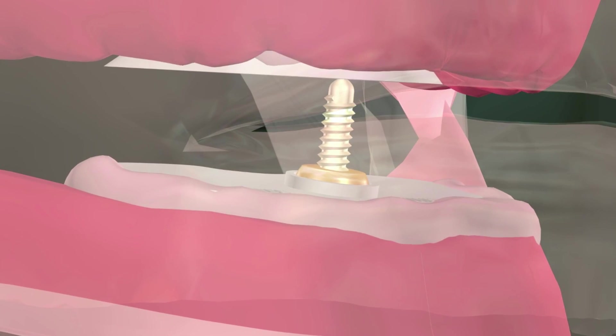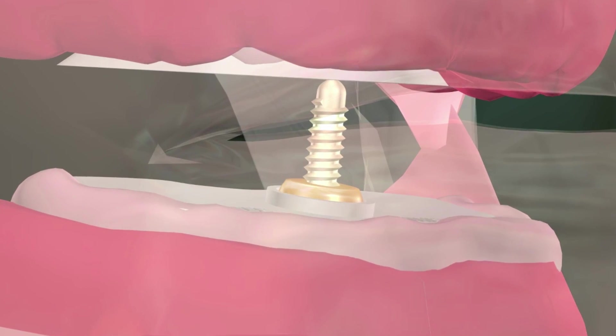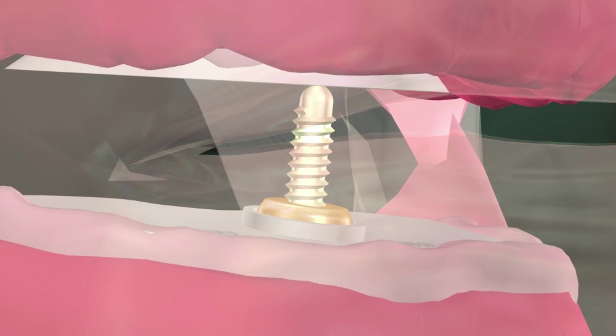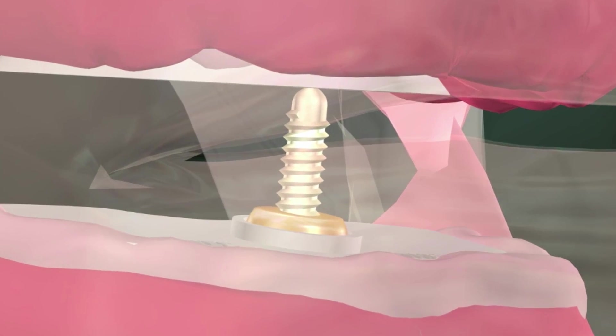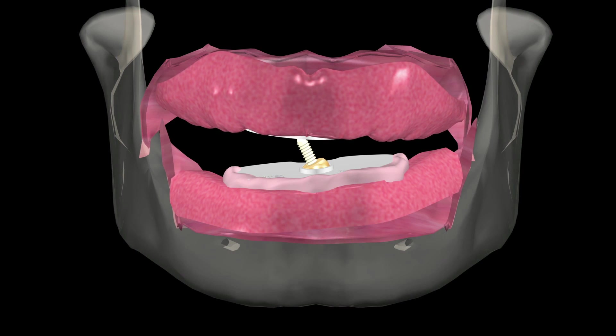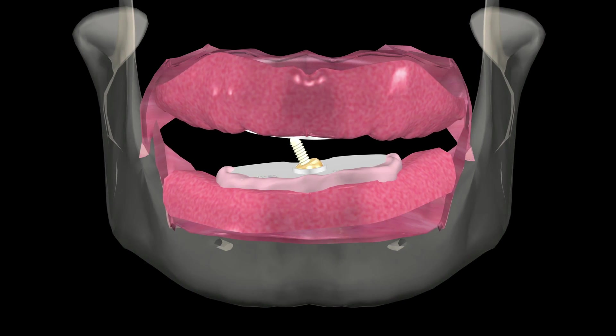A common problem among Gothic arch-tracing devices is that, if they are not mounted correctly, the pin will not contact the striking plate in a perpendicular relationship. When this occurs, the assembly will not stabilize the base plates. The result is a rocking motion of the plates and an incorrect centric jaw record.